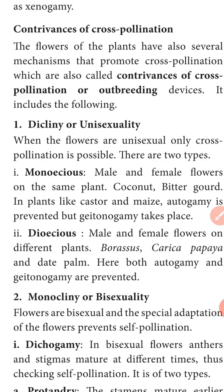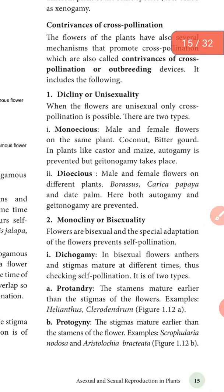The second is dioecious — male and female flowers in different plants. Examples include Borassus, Carica papaya, date palm. In monocliny or bisexual flowers, there is a special adaptation to prevent self-pollination. In this, monocliny subdivisions include dichogamy, hercogamy, and heterostyly. In dichogamy, the anther and stigma mature at different times — protandry means anther matures first; protogyny means gynoecium matures first. Examples of protandry include sunflower; protogyny includes Aristolochia and Scrophularia nodosa.